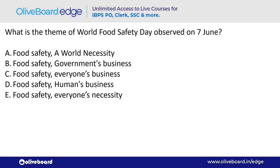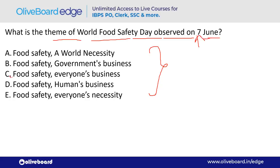What is the theme of World Food Safety Day observed on 7th June every year? The theme is 'Food Safety, Everyone's Business' — option C is the correct answer. Remember: World Food Safety Day is on 7th June.